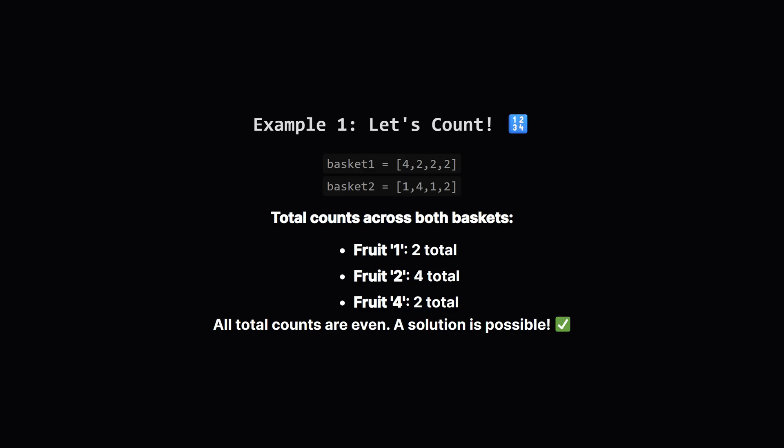Let's apply this check to the first example. We have basket one and basket two. If we count everything up, we find we have two fruits of cost one, four fruits of cost two, and two fruits of cost four in total. All these counts, two, four, and two, are even. Great! This tells us a solution is definitely possible. Now we can move on to figuring out the cheapest way to do it.